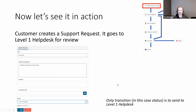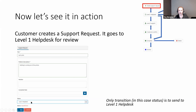Now we're going to see this application in action. The customer clicks on the Support Request link, the new form opens up, and they fill it out. In this case they have a problem with printing and put in a description of the problem. Once they click the save button, it submits to the level one help desk. In the status dropdown at the bottom, 'Level One Help Desk' is the default option — if the customer clicks on it, there won't be any other options because they don't have permission to do any other actions.